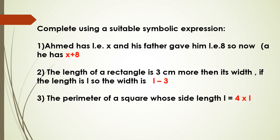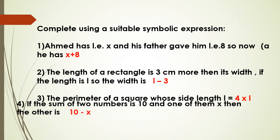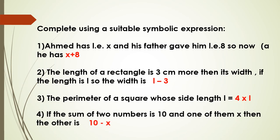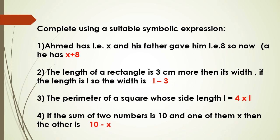The perimeter of a square whose side length is L will be 4 times L. If the sum of two numbers is 10 and one of them is x, then the other will be 10 minus x. Thank you for listening, my dear students. I hope to see you soon.